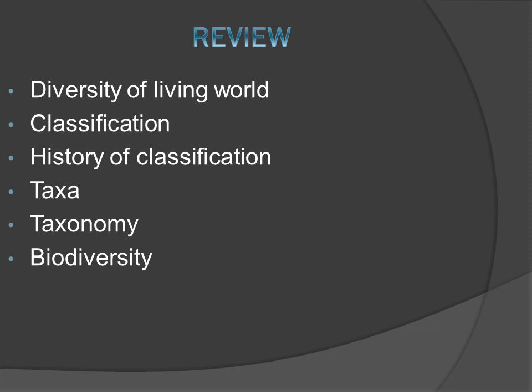We covered the history of classification and key terms: taxon and taxonomy. In the diversity of the living world, we discussed various forms of organisms and species — 8.7 million species have been identified so far. Classification means categorizing things as per their characters. Taxon is the scientific term for a category, such as kingdom, phylum, or class. Taxonomy means the system of classification.